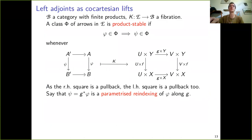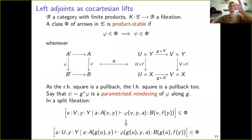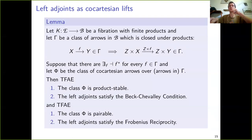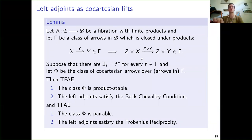We have a couple of closure conditions on classes of arrows in E: one says the class is product stable, the other says it is pairable. The important thing is that these two closure conditions correspond precisely to the Beck-Chevalley condition and Frobenius reciprocity for left adjoints: if you take a class of arrows Γ closed under products in this sense, and assume there are left adjoints to re-indexing along arrows in Γ, then you also have co-cartesian lifts. The left adjoints satisfy Beck-Chevalley and Frobenius reciprocity if and only if the co-cartesian arrows are product stable and pairable.